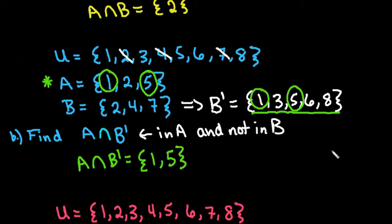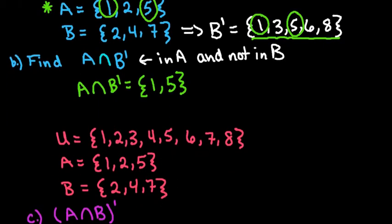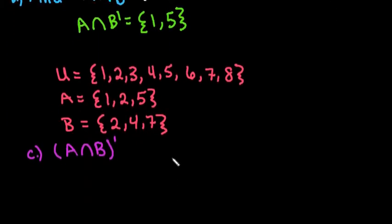For the next one, this is read as not in A and B. So we're looking for all values that are not in both A and B. So the first thing you would do is find the intersection of A and B.